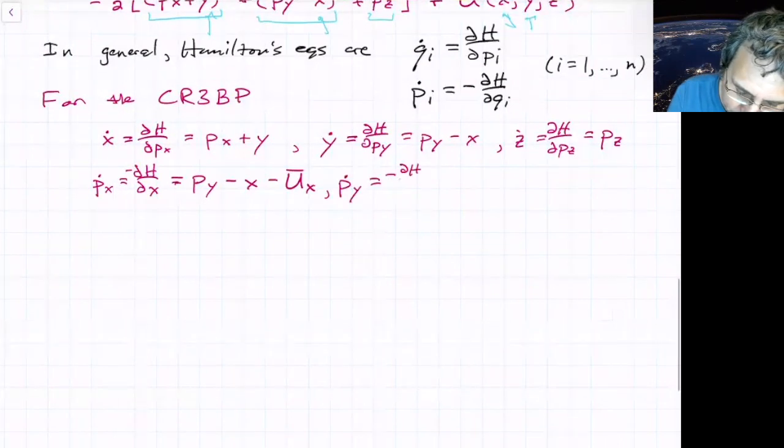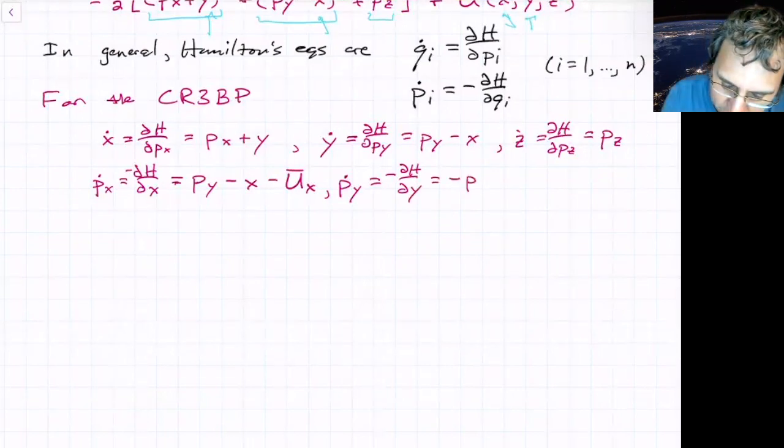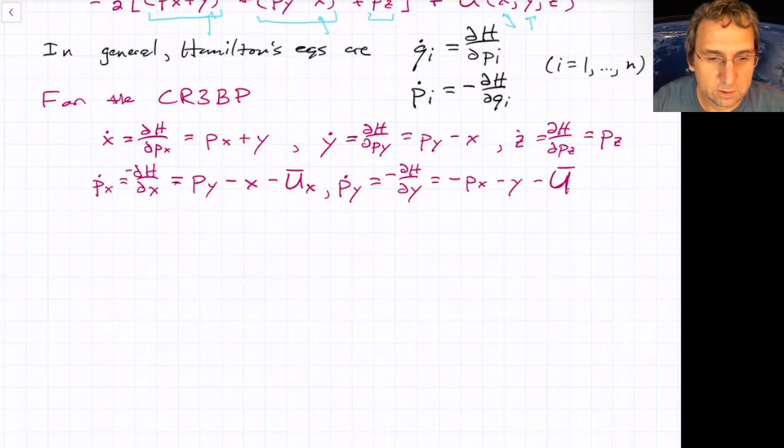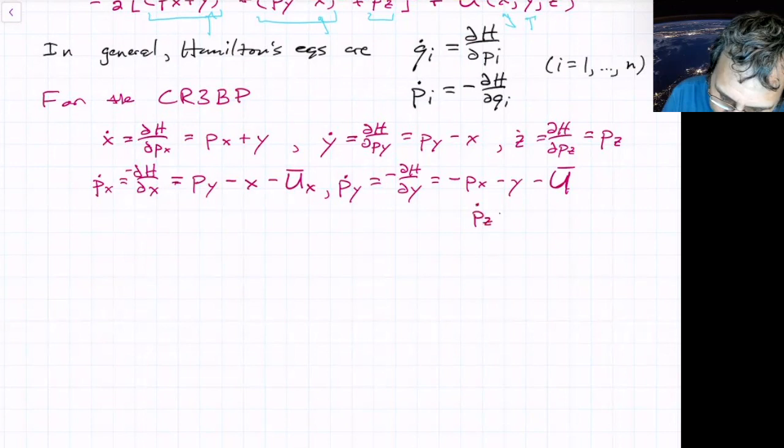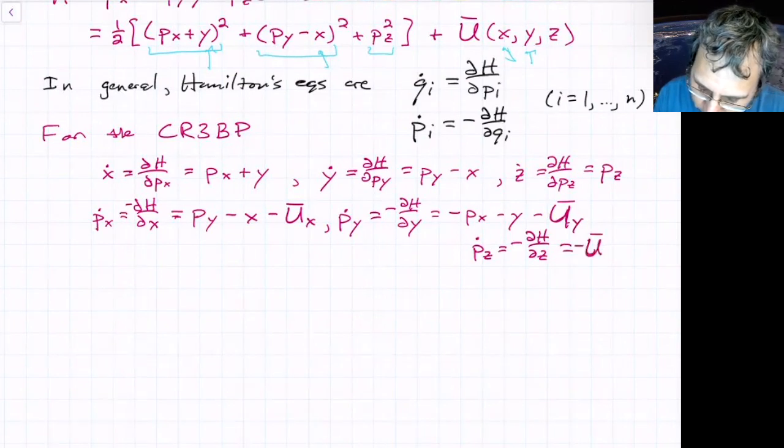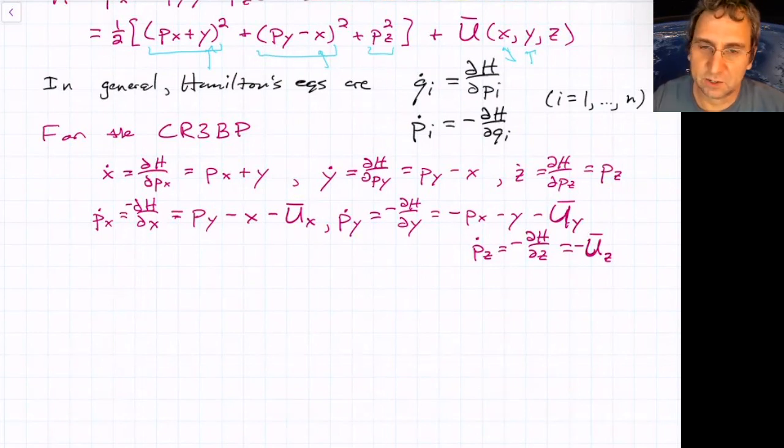If we do py dot, it's the same thing, same procedure, partial h, partial y, and this equals negative px minus y minus u bar, and I don't want to give short shrift to z. Let me put it here. pz dot is negative partial h, partial z, but that only shows up in the potential energy. So, oh, this should be a sub y. This is minus u sub z. A bunch of partial derivatives of that effective potential energy.